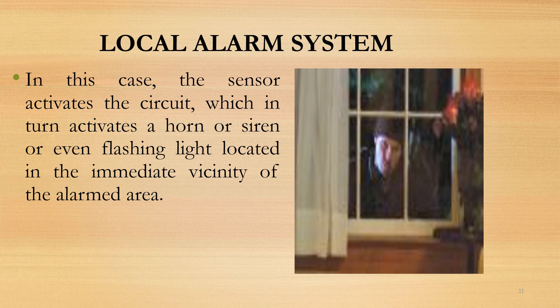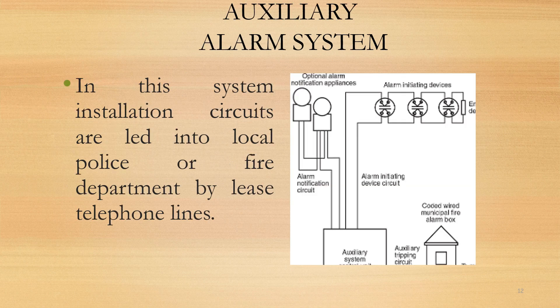Local alarm system — this system consists of bringing up a visual or audible alarm near the object to be protected. When an intruder tries to pry a window, the alarm there goes off.